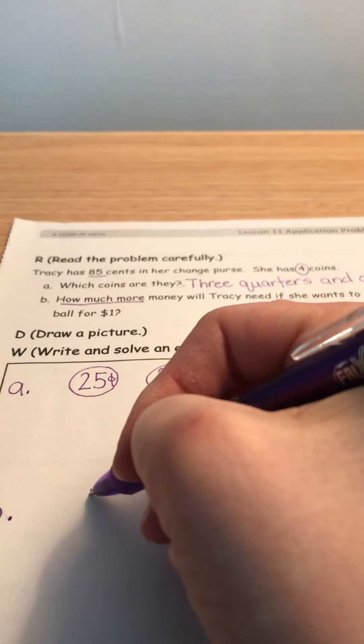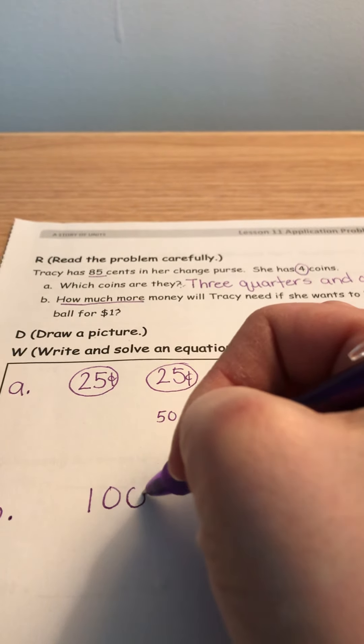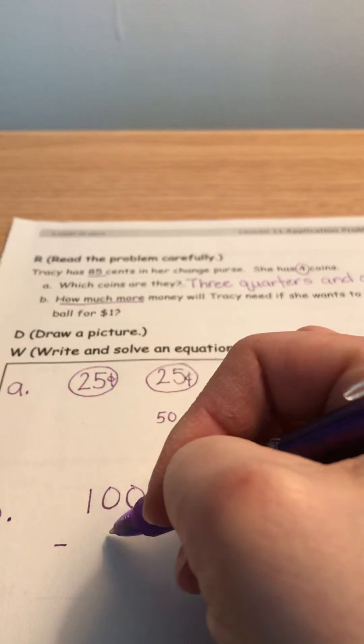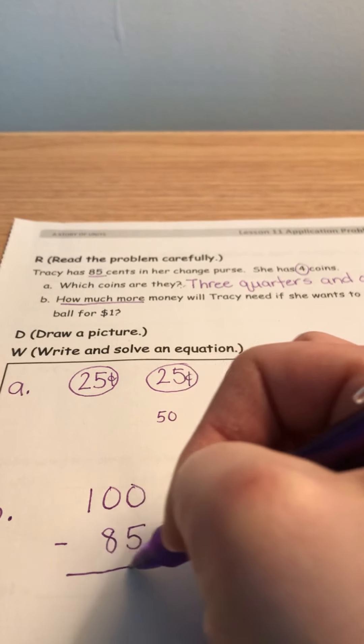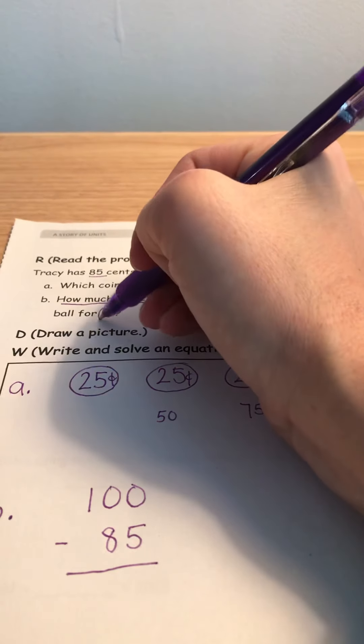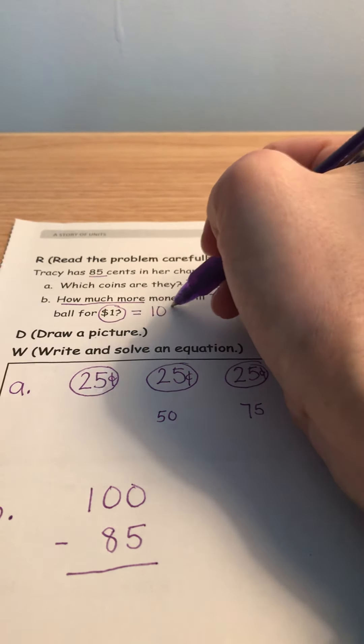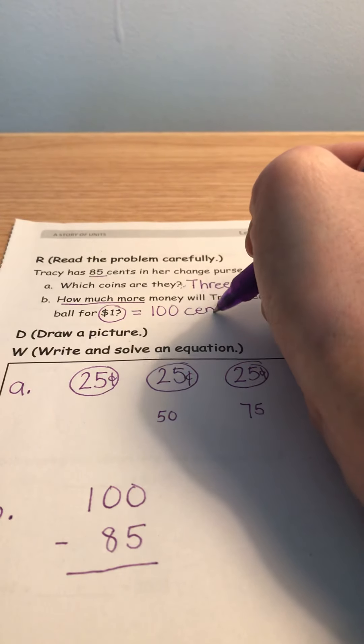So let's put 100 cents minus 85 cents. Now where did I get 100 cents? Because I know that $1 equals 100 cents.